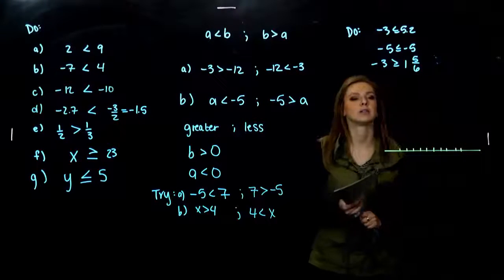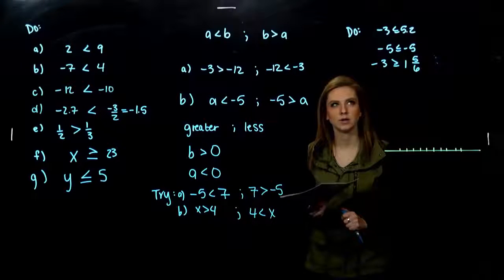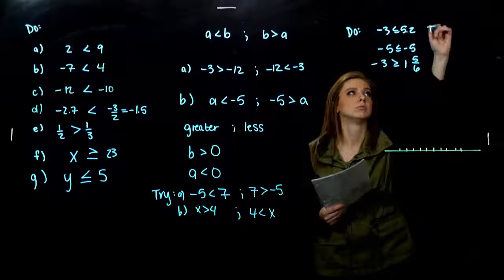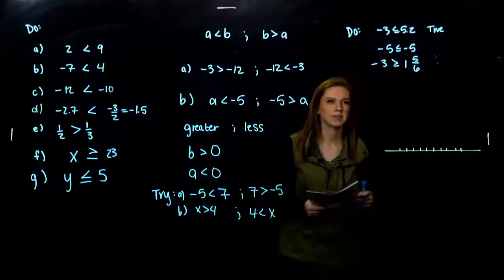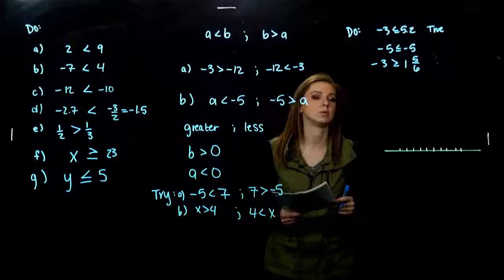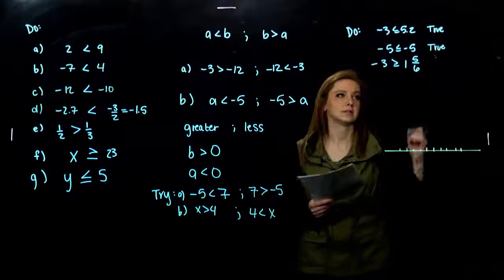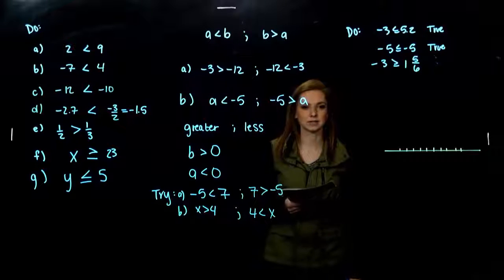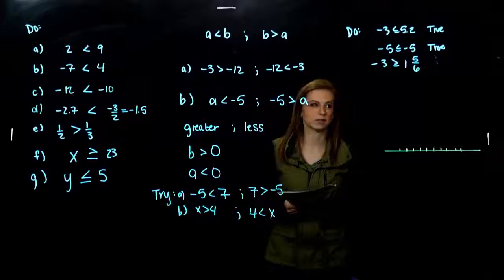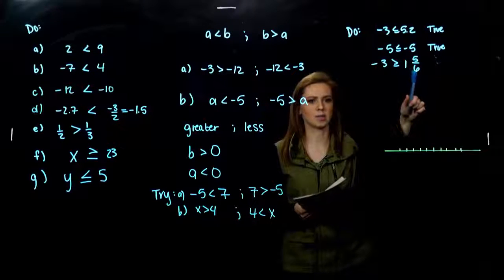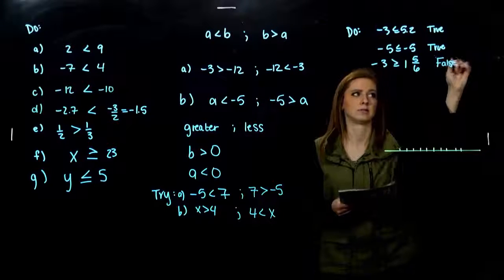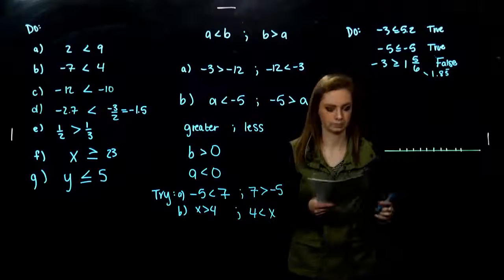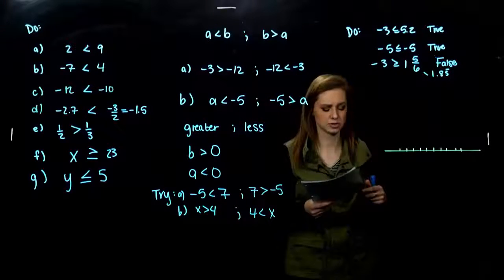We want to determine whether these inequalities are true or false. Is negative 3 less than or equal to 5.2? That's true — it's not equal to, but it is less than, so it's satisfied. Is negative 5 less than or equal to negative 5? True, because it's exactly equal to. What about negative 3 greater than 1 and 5 sixths? Is a negative ever larger than a positive? Definitely false. We could approximate 1 and 5 sixths as 1.83 repeating, but a negative is never going to be larger than a positive.